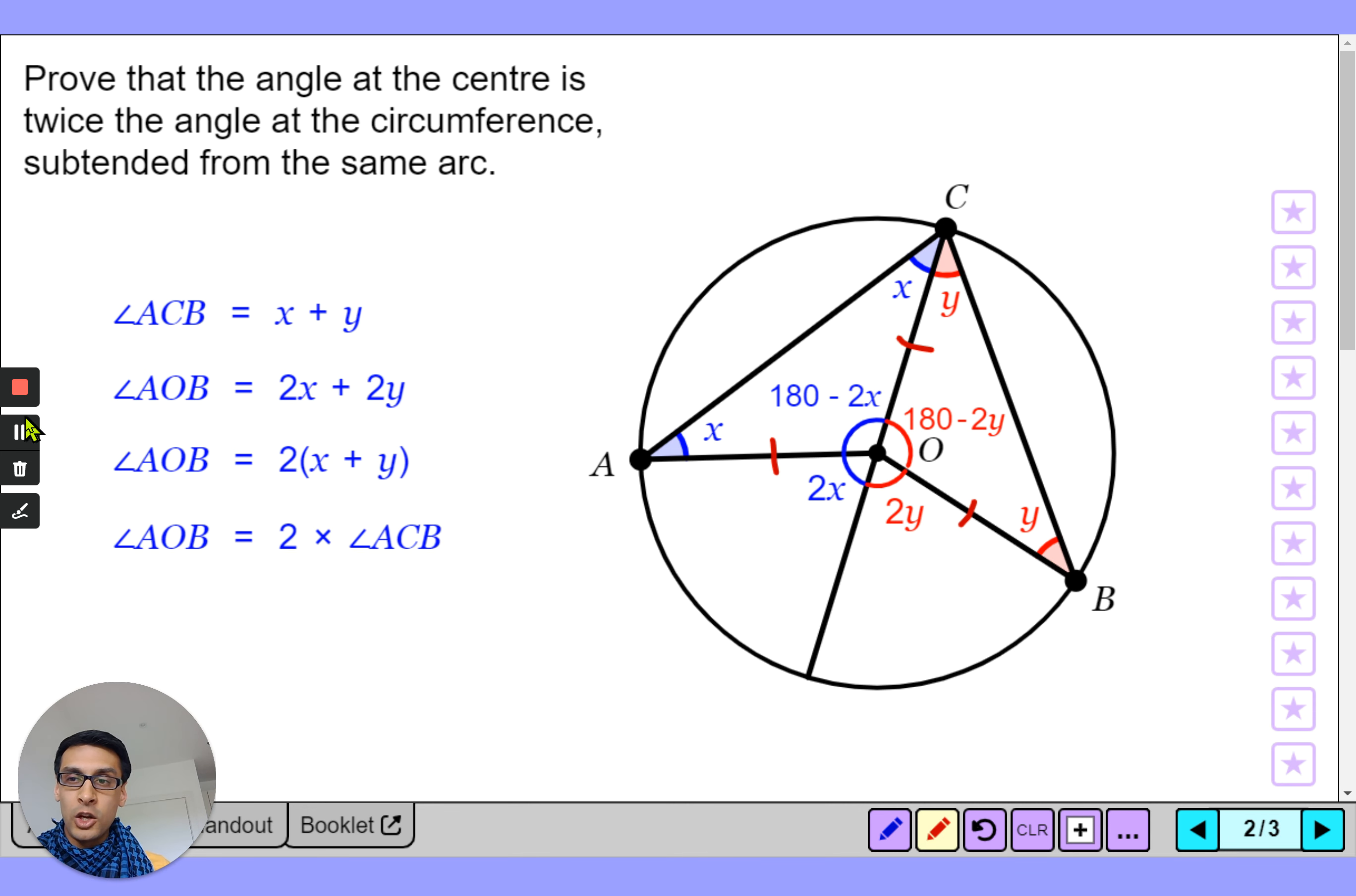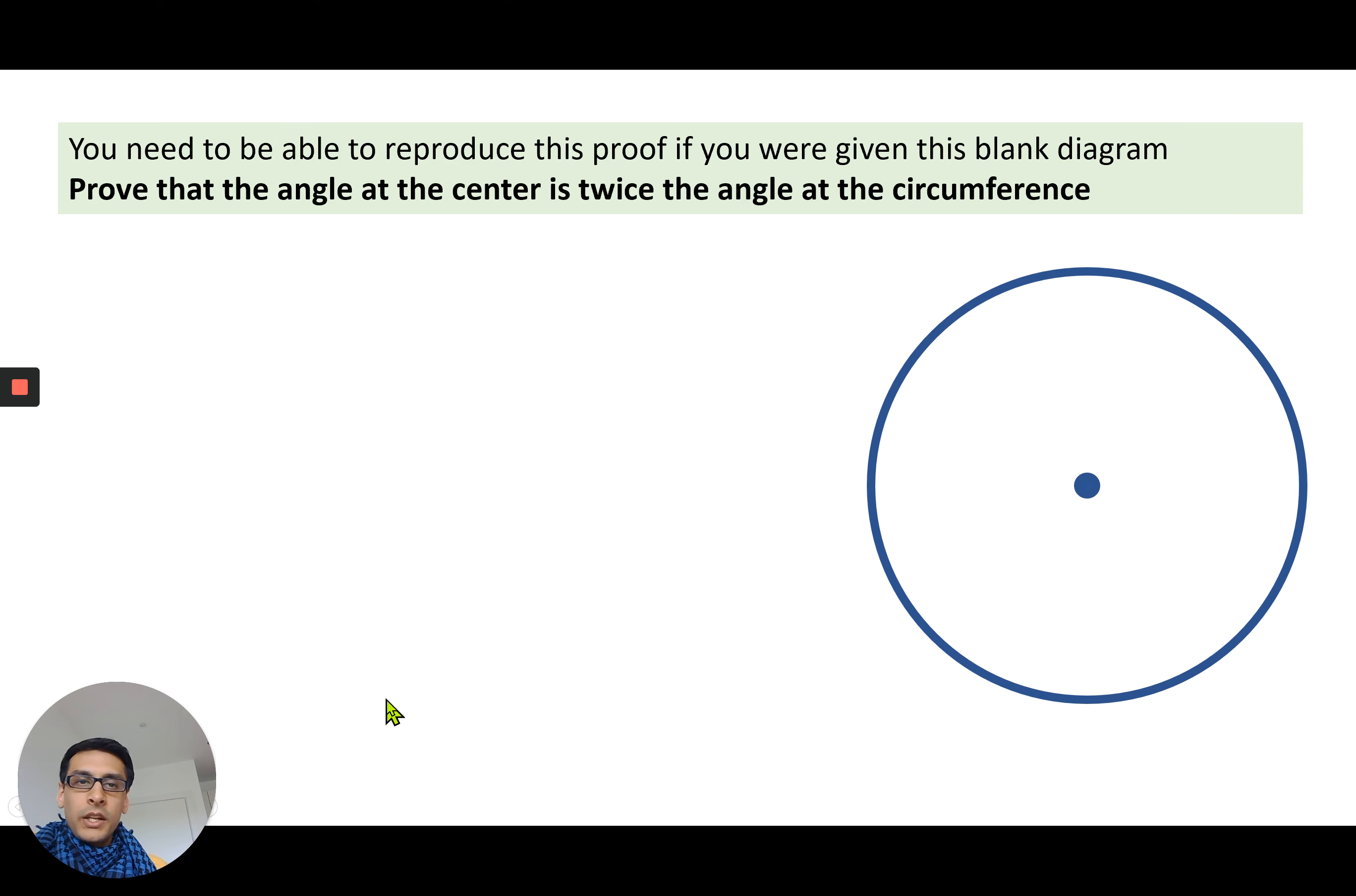Then you should have a go at a few questions. Okay so this is what a question might look like: prove that the angle at the center is twice the angle at the circumference. You're given a blank diagram, have a go, pause the video now.